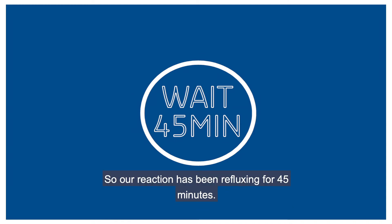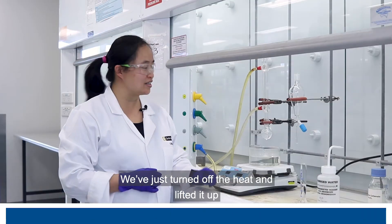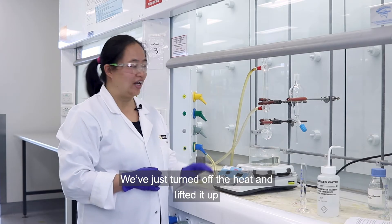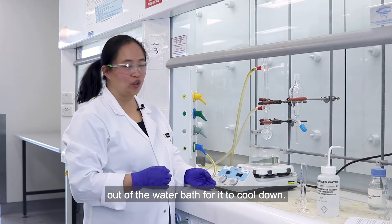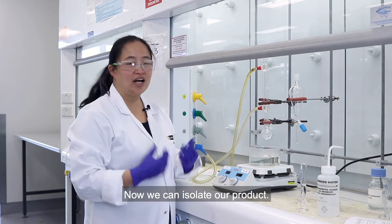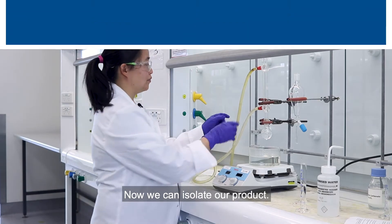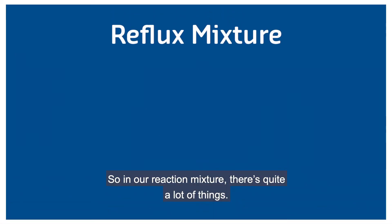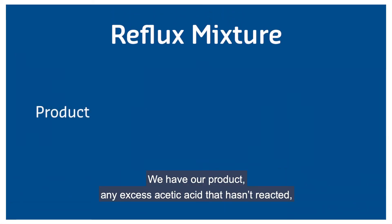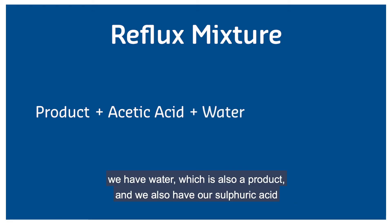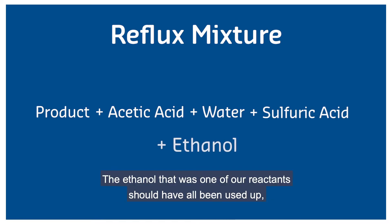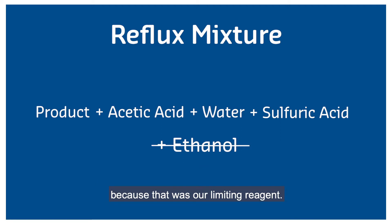So our reaction has been refluxing for 45 minutes. We've just turned off the heat and lifted it up out of the water bath for it to cool down. Now we can isolate our product. In our reaction mixture there's quite a lot of things: we have our product, any excess acetic acid that hasn't reacted, water which is also a product, and our sulfuric acid catalyst. The ethanol, which was one of our reactants, should have all been used up because that was our limiting reagent.